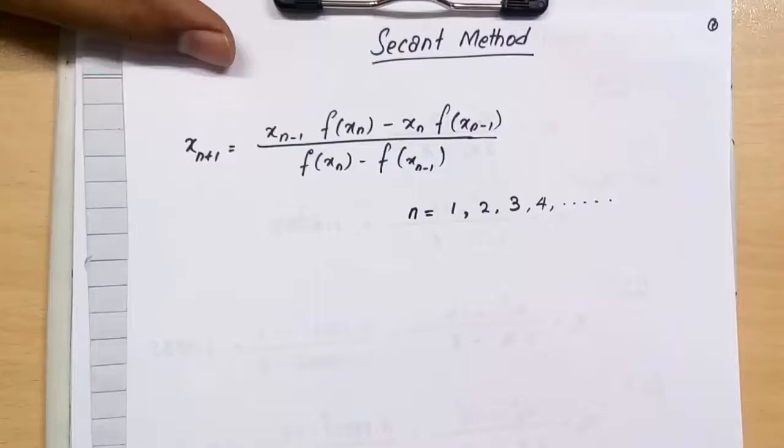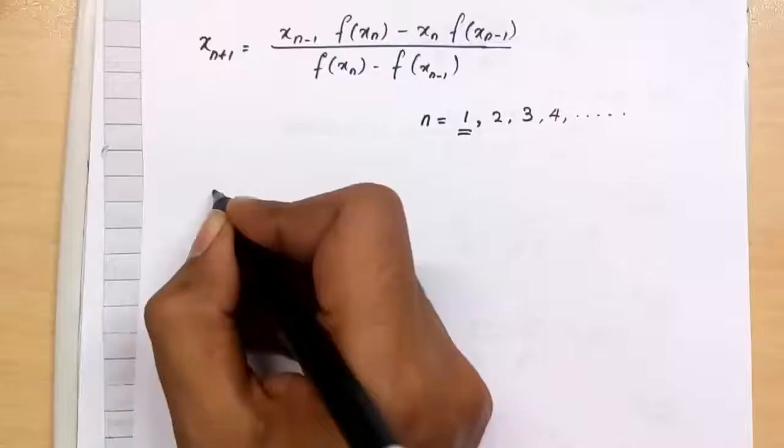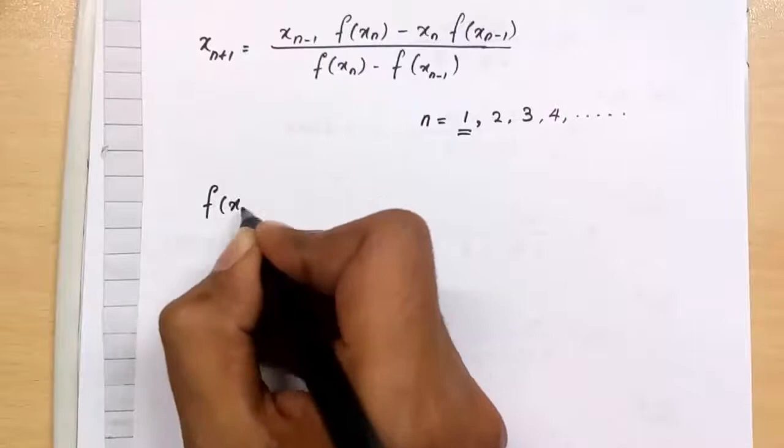But what is the reason for this third method? We use this method in cases where the first-order derivative of the function is very complicated to use the Newton-Raphson method. Like Newton-Raphson method, secant method also does not give surety about convergence.